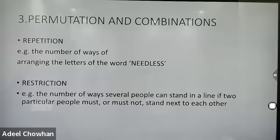The third topic is permutation and combination. Before starting, remember: if the arrangement matters, it is permutation; if the arrangement does not matter, it is called combination. We will cover two types — one is with repetition and the other is without repetition — and a third case with restriction of numbers.